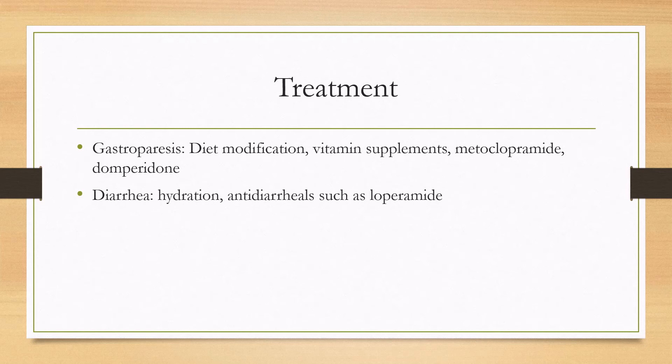For treatment of gastroparesis, first focus on diet modification such as avoiding fatty and acidic foods. People with gastroparesis may have vitamin deficiencies due to decreased food intake, so vitamin supplements are important. Metoclopramide and domperidone can also be used. For diarrhea, ensure proper hydration; medication treatment is mostly symptomatic and antidiarrheals such as loperamide can be used.